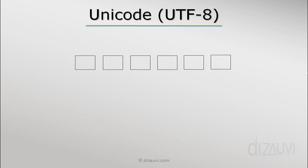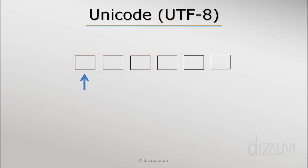If we are given a sequence of bytes representing characters in UTF-8 and asked to parse them, we start from the first byte. But how many bytes should we read before figuring out the first character? Since UTF-8 is multi-byte, the first character might be encoded in one, two, three, or four bytes. So our definition of UTF-8 is still incomplete — we need to define how to determine the byte count.